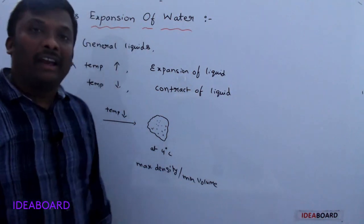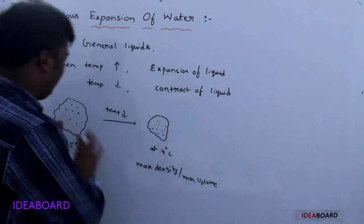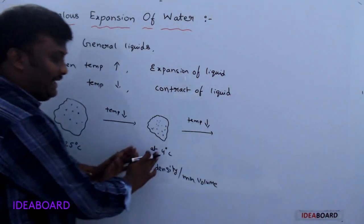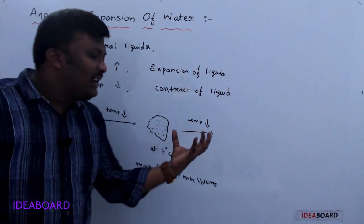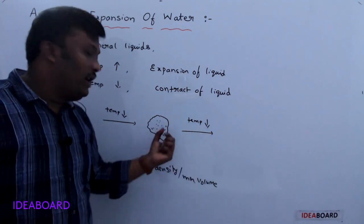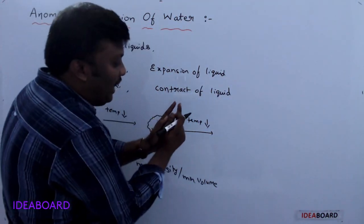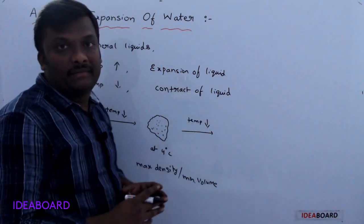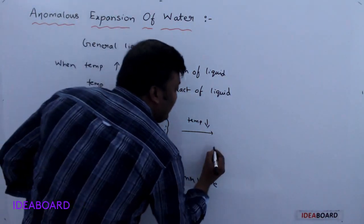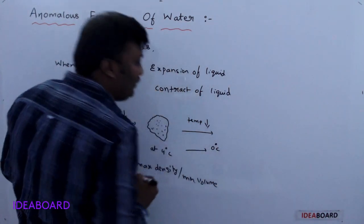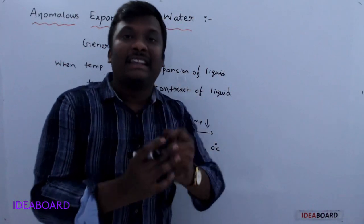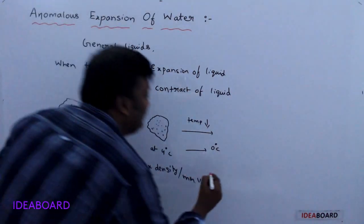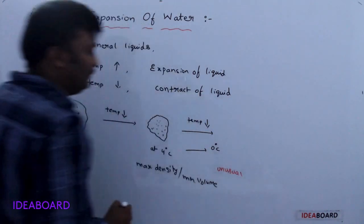At 4 degrees Celsius, water has maximum density or minimum volume. This is the usual behavior. But whenever the temperature is reduced further, below 4 degrees Celsius, the water molecules cannot come any closer because the volume is already at minimum. So the water molecules spread apart — the gap between them increases. From 4 degrees Celsius to 0 degrees Celsius, the gap between molecules increases, meaning water expands.